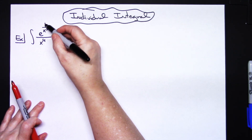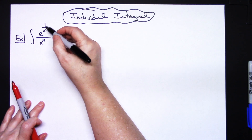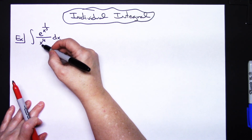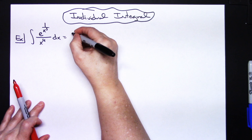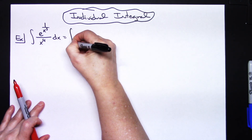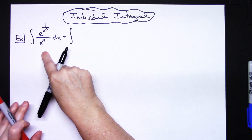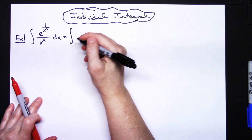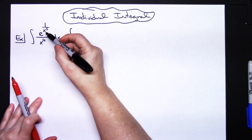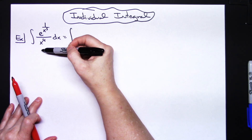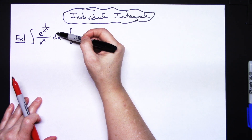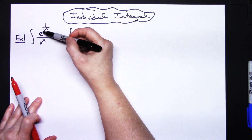Because I've got this 1 over x to the third as an exponent and then I've got an x to the fourth in the denominator, I'm going to algebraically manipulate this using some laws of exponents just to make this a little bit easier. I don't want a fraction, so I'm going to move this x to the fourth up and make the four negative.